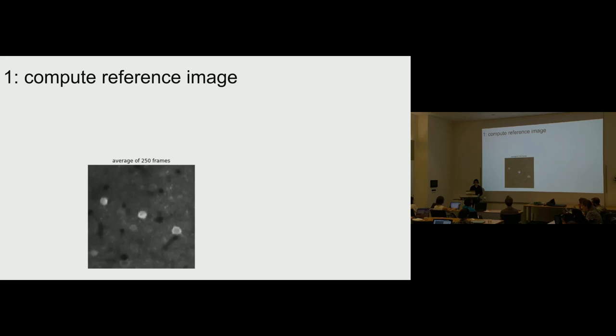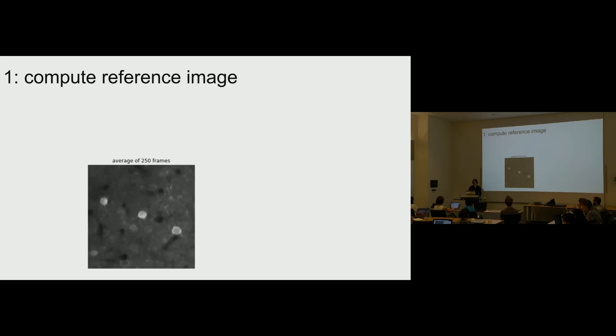To compute the reference image: something commonly done is to take the average of maybe 250 frames and use that as your reference image. But can anyone tell me why you might not want to just use the average? If frames are shifted with respect to one another, things will get blurry. If you just take the average of frames, your reference image is going to be blurry, and that's really problematic because you want something crisp to align the edges of your cells to across time.